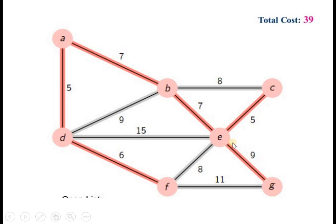This edge is not yet visited, so you have to select it. The number of edges selected are 6, and the number of vertices are 7. You have to visit all vertices with the number of edges being one less than the number of vertices. So with 7 vertices, 6 edges are visited to complete the minimum spanning tree.